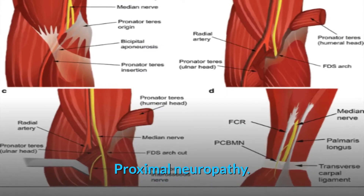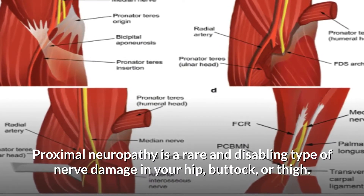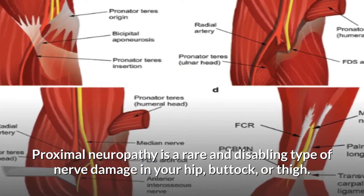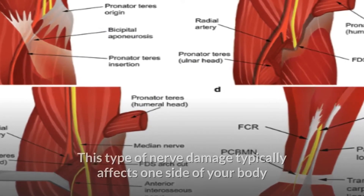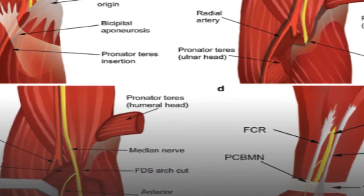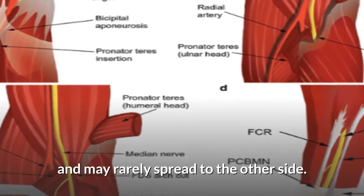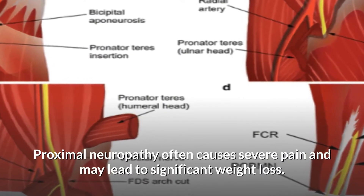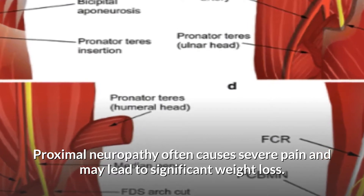Proximal neuropathy is a rare and disabling type of nerve damage in your hip, buttock, or thigh. This type of nerve damage typically affects one side of your body and may rarely spread to the other side. Proximal neuropathy often causes severe pain and may lead to significant weight loss.